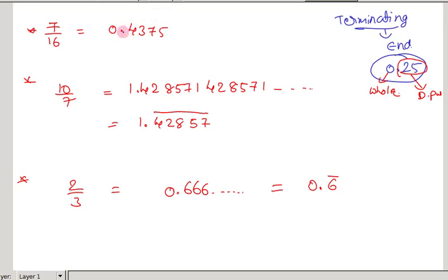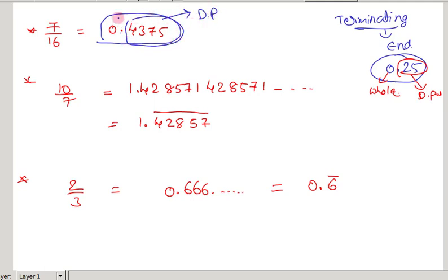For example, 7 by 16 gives 0.4375, which has four digits in the decimal part. Since we can count the number of decimal places, it is a terminating decimal. But for 10 by 7, which gives 1.428571 repeating, a group of digits continues infinitely. So there are infinitely many decimal places, making it a non-terminating decimal.